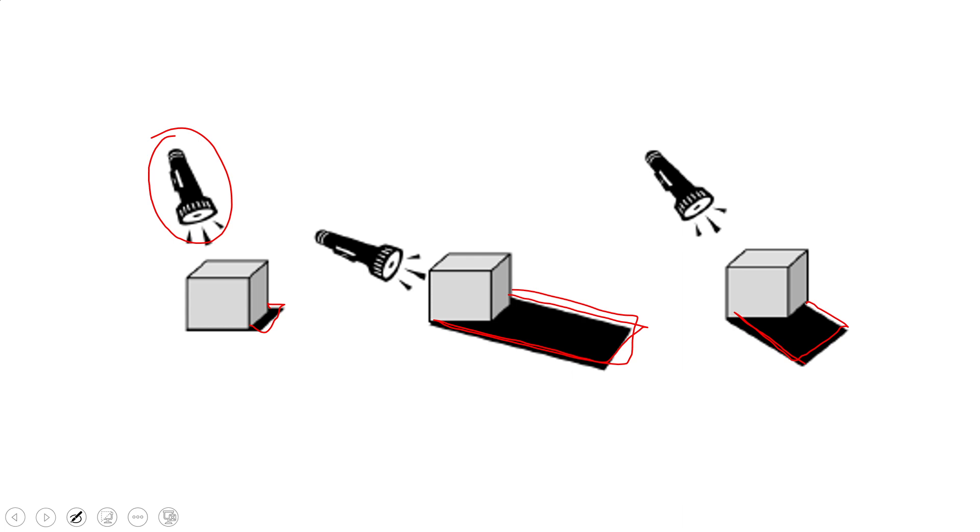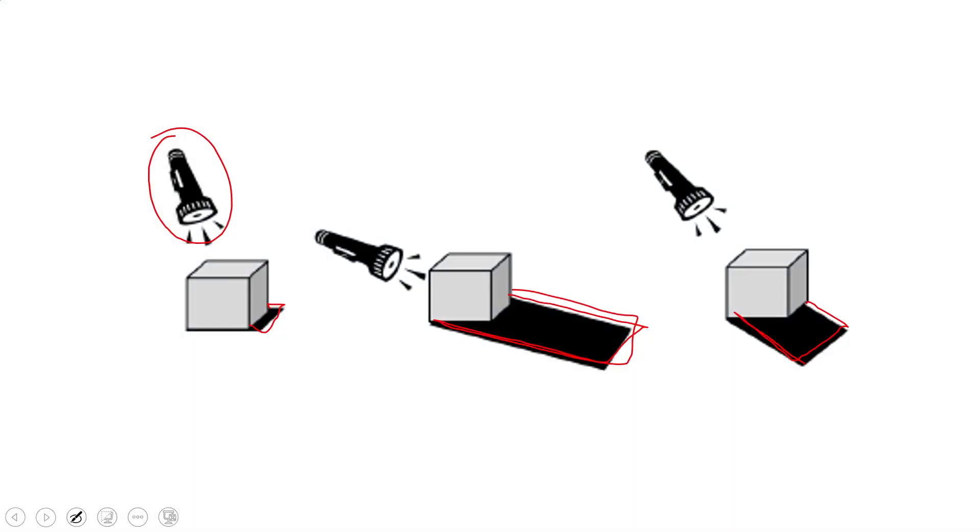The length of the shadow increases or decreases based on the position of the light source. When the light source is low, shadows lengthen — as in morning or evening. When the light source is at the top, the shadows become very short. Similarly, your shadow from the sun is longer in the morning and evening, whereas at noon it becomes short. When the source is closer the shadow becomes very big; when it is away the shadow becomes very small.